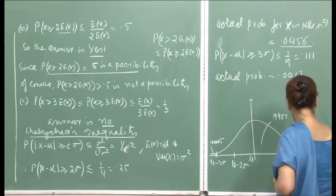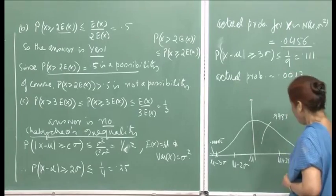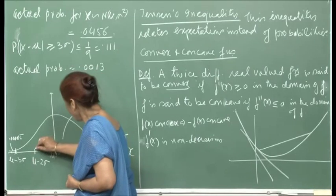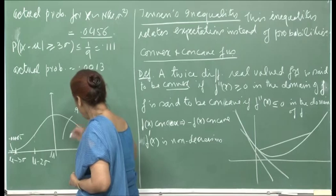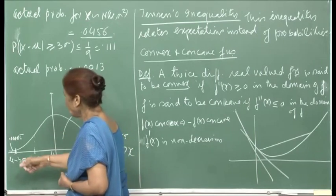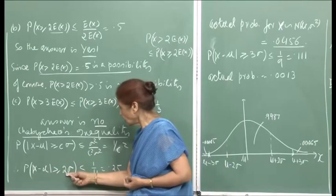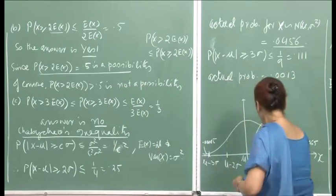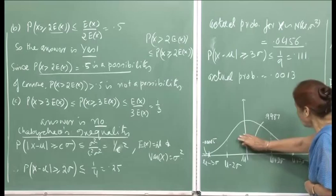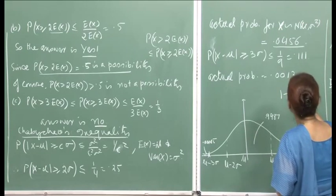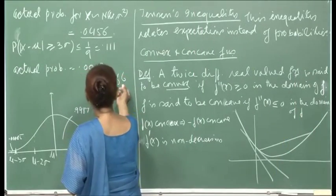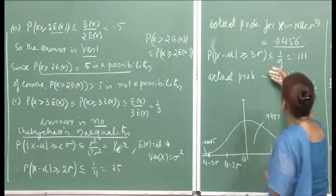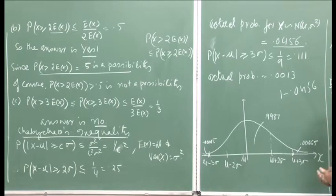Looking at the diagram, with the x-axis as the mean and the PDF plotted, the area between μ − 2σ and μ + 2σ is what we are computing. The absolute value |x − μ| ≥ 2σ means x lies outside μ − 2σ and μ + 2σ. This area would be 1 − 0.0456, and the difference between the Chebyshev bound and the actual probability is quite large.